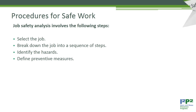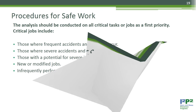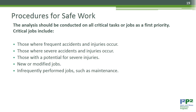Job safety analysis involves the following steps: select the job, break down the job into a sequence of steps, identify the hazards, and define preventative measures. The analysis should be conducted on all critical tasks as a first priority. Critical jobs include those where frequent or severe accidents and injuries occur, those with potential for severe injuries, new or modified jobs, and frequently performed jobs such as maintenance.